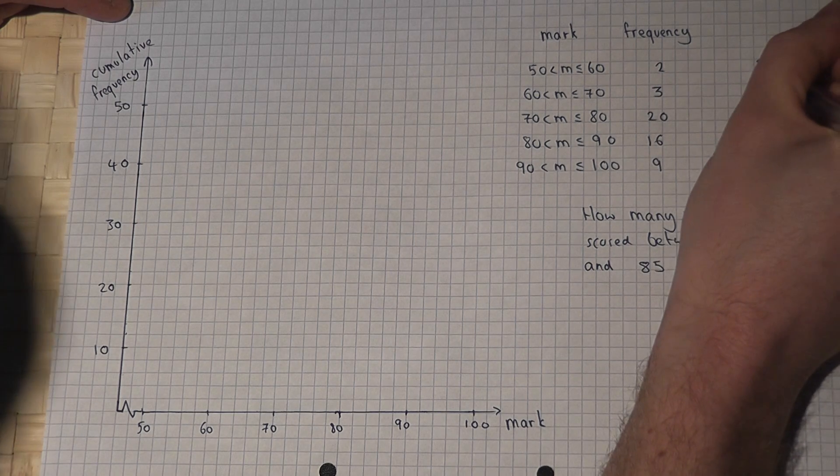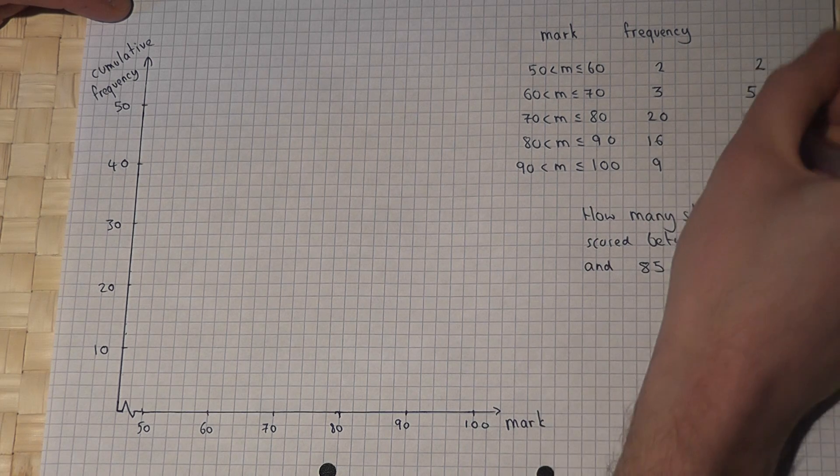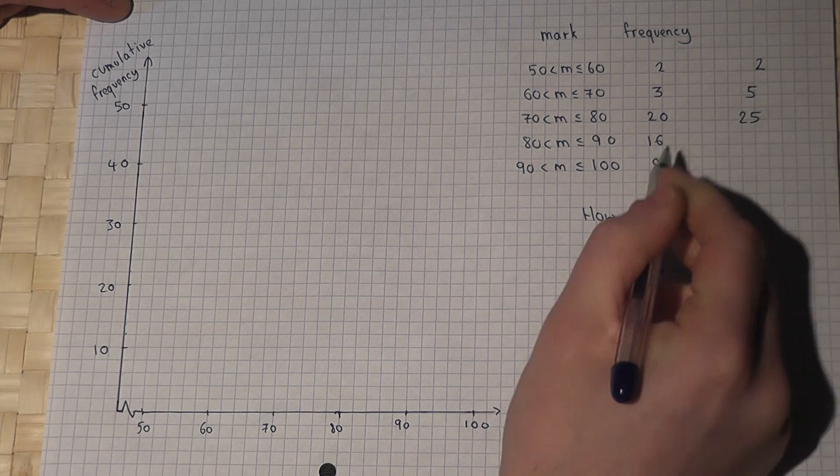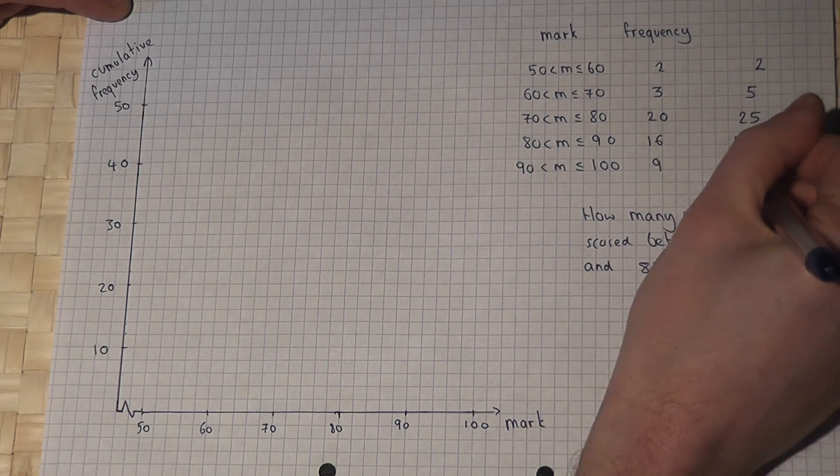So we have a 2, then 2 plus 3 is 5, 20 plus 5 is 25, add on 16 we get to 41 and add on 9 we get to 50.